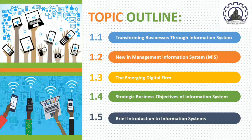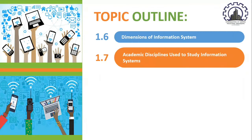In today's lesson, there are seven key areas that I'm going to be highlighting. First, transforming businesses through information systems. Second, what's new in management information systems or MIS. Third, the emerging digital firm. Fourth, the strategic business objectives of information systems. Fifth, a brief introduction to information systems. Sixth, dimensions of information systems. And finally, the academic disciplines used to study information systems.